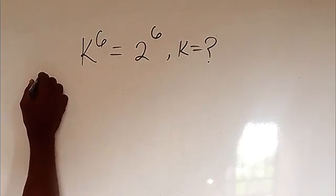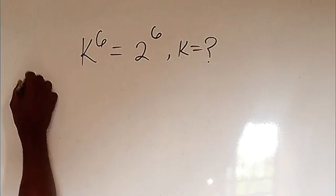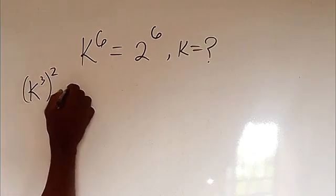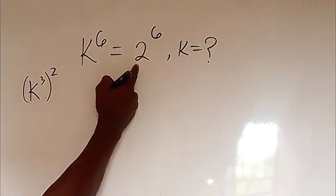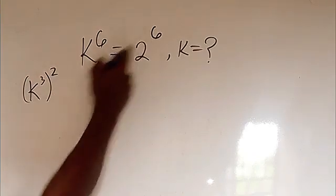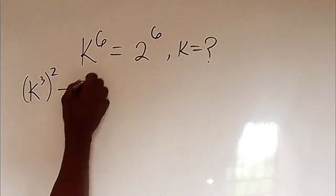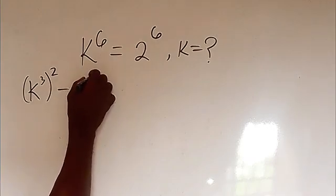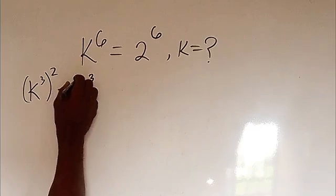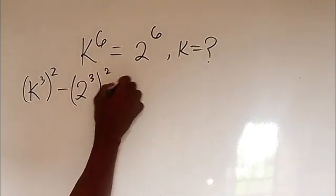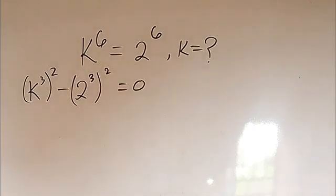We rewrite it as: k to the power of 3, all to the power of 2, then transpose 2 to the power of 6 to this side as 2 to the power of 3, all to the power of 2, equals zero.